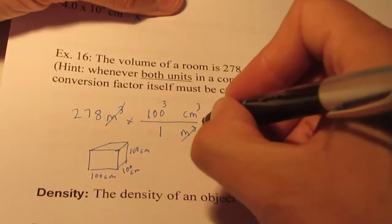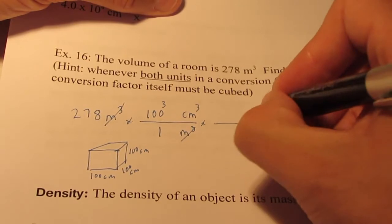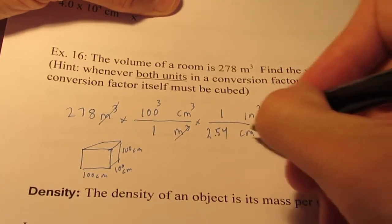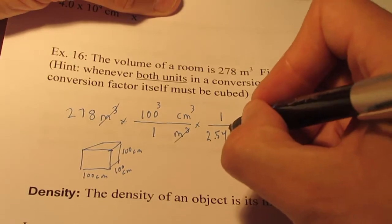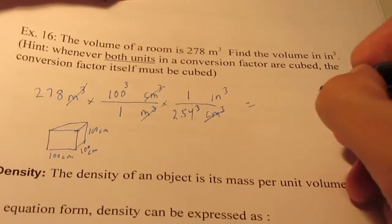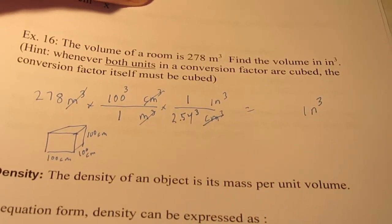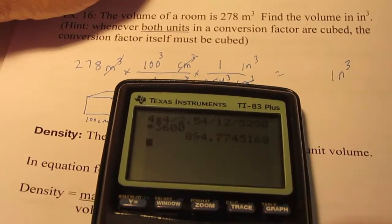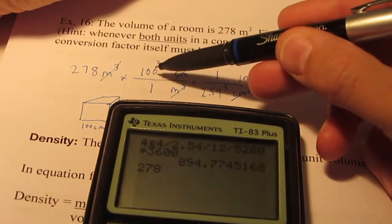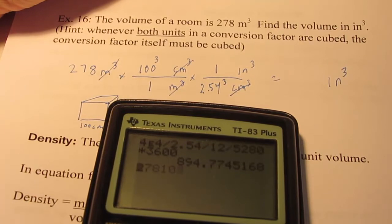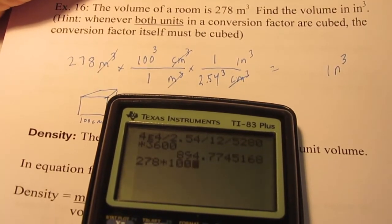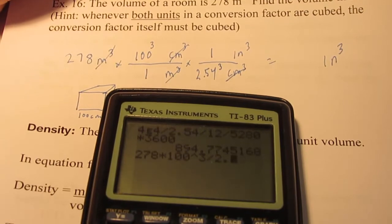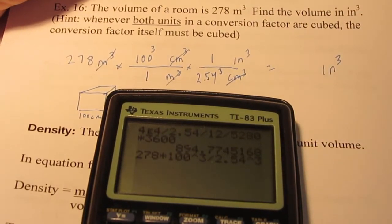Now we're going to hop out of cubic centimeters and get into our desired unit, cubic inches. Remember, in one inch, there are 2.54 centimeters. But in a cubic inch, there must be 2.54 cubed cubic centimeters. Let's get our calculator out. We have 278 times 100 cubed divided by 2.54 cubed.